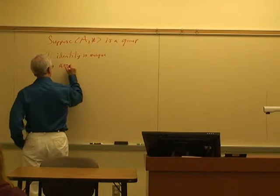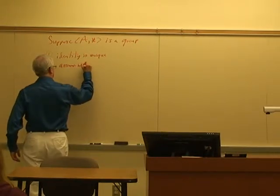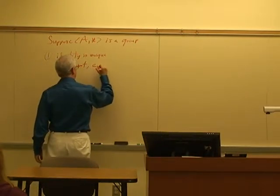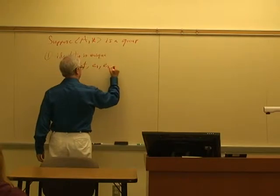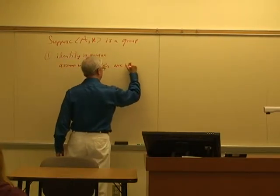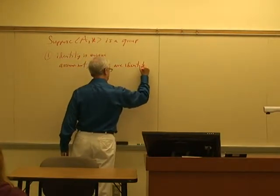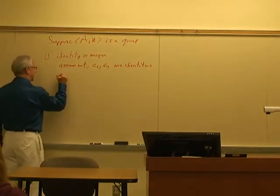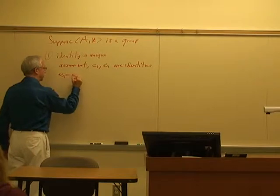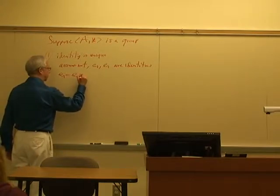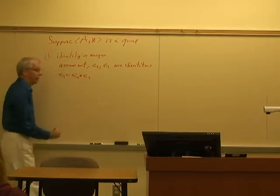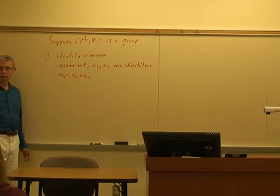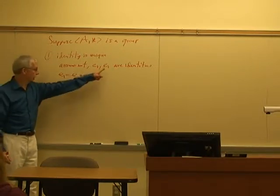Assume that E1, E2 are identities. As they both serve the function of identity, then E1 is certainly equal to E1 star E2. Why? Because E2 is an identity, right?